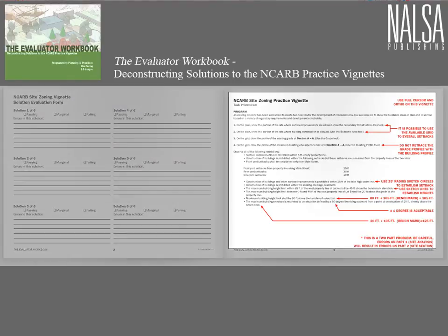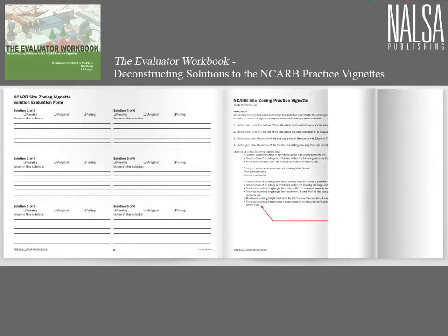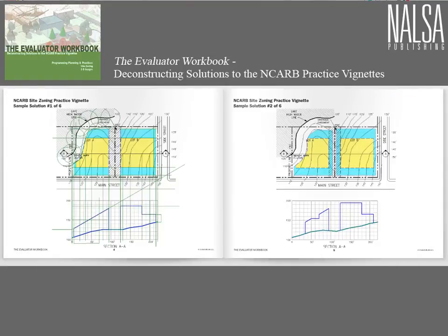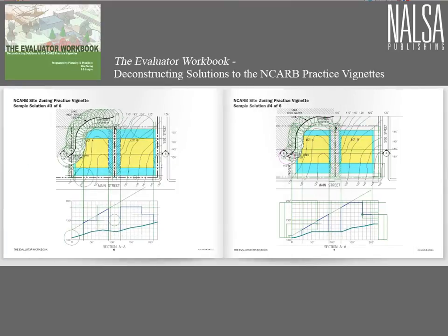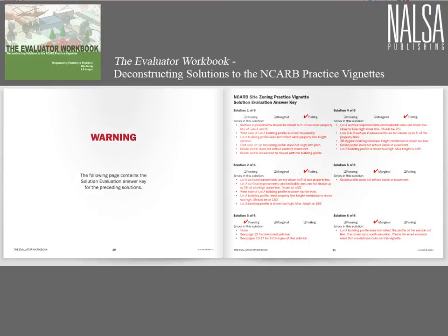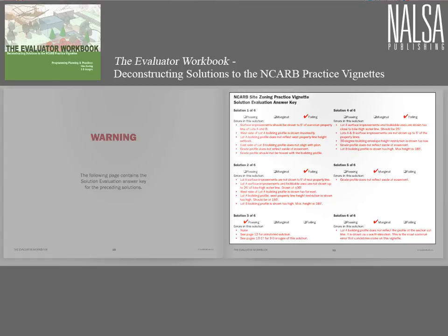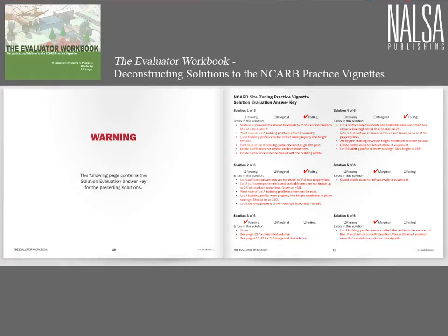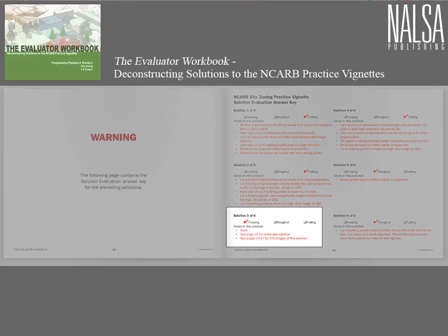We've reproduced the end-carb program, but here it's annotated. We've highlighted important issues and explained the programmatic elements that candidates find most confusing. Based on a clear understanding of the program, analyze each of the six sample solutions, identify the errors, and determine if each is passing, marginal, or failing. Once you've completed the solution evaluation form, compare your list to ours to see if you've found all of the errors. This exercise teaches you to easily recognize common errors so you can avoid making the same mistakes on test day.